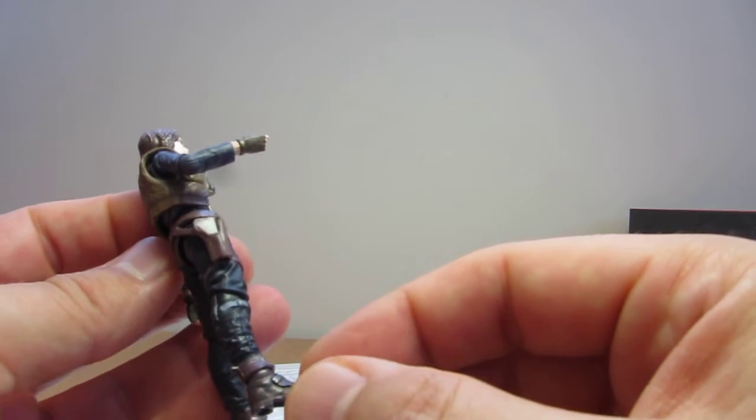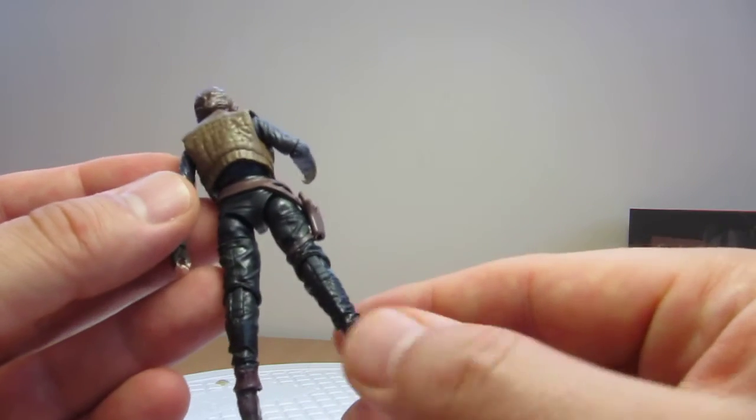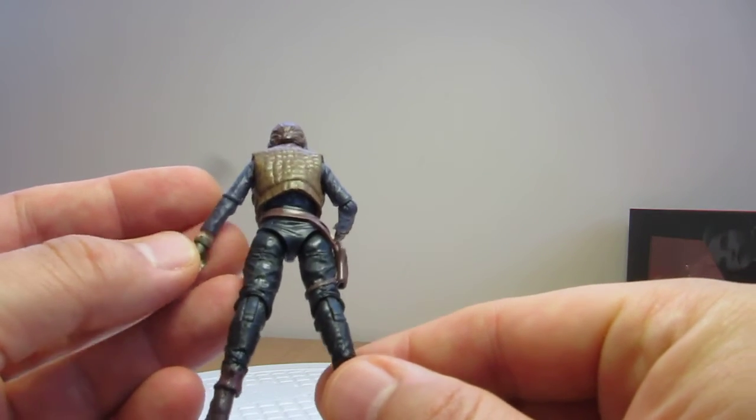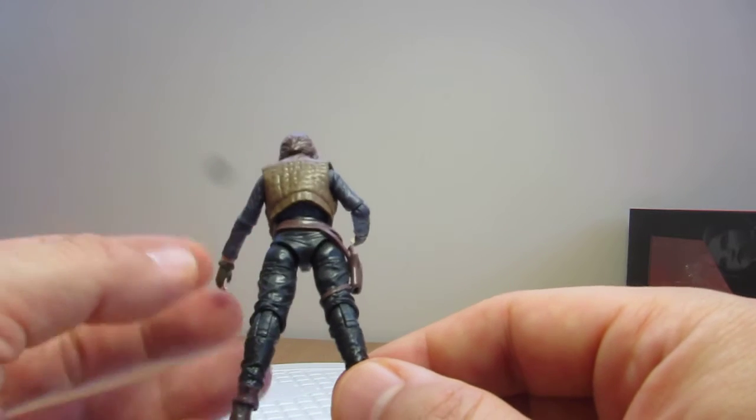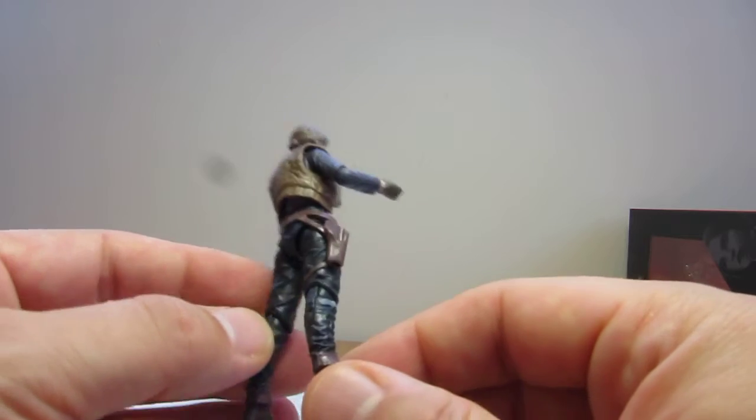She's even got a working holster, little wrinkles in the fabric down at the boots. It's a good looking figure, even all the little cushioned parts on the back of her waistcoat.